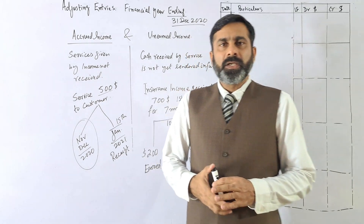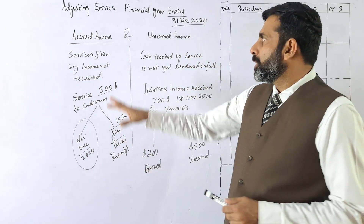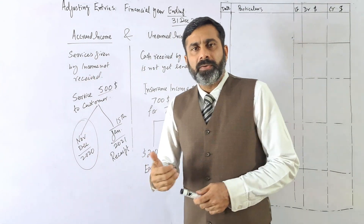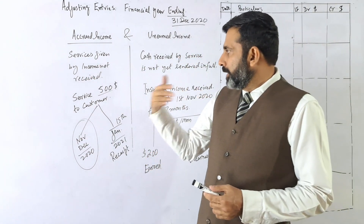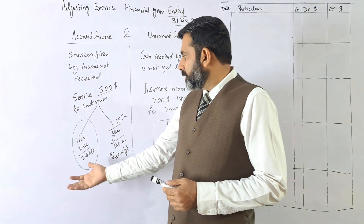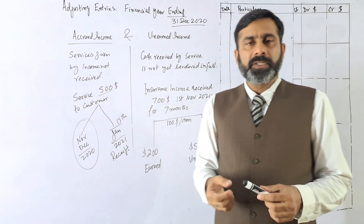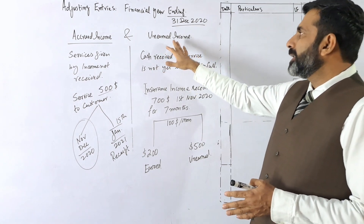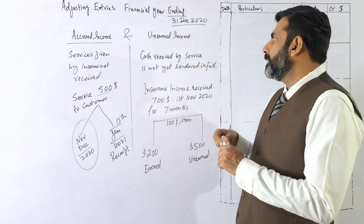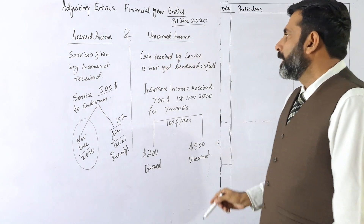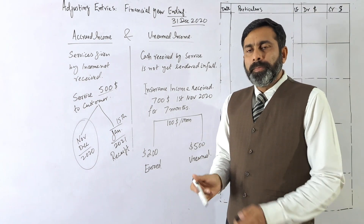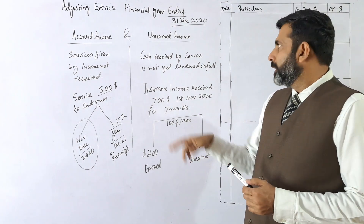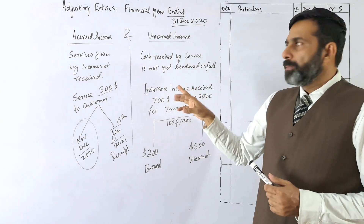In the previous lectures we discussed accrued income — the service you have given to the customer but you have not yet received the money. Here we are discussing unearned income, which means you have received the cash but the service has not been delivered in full.